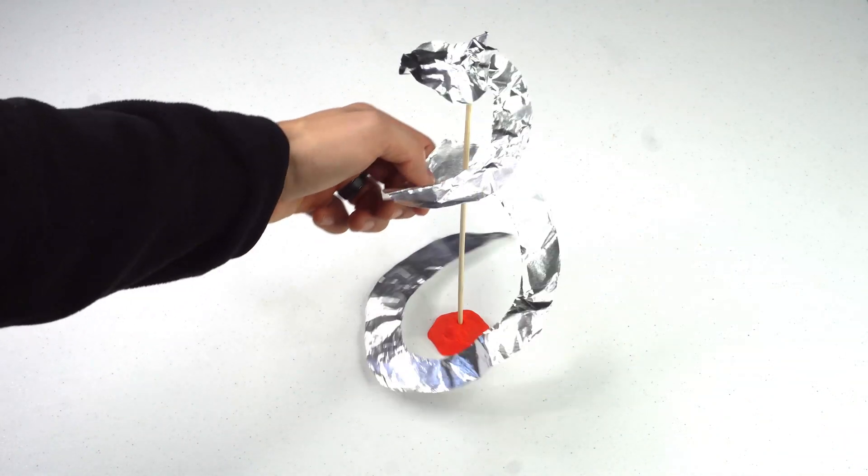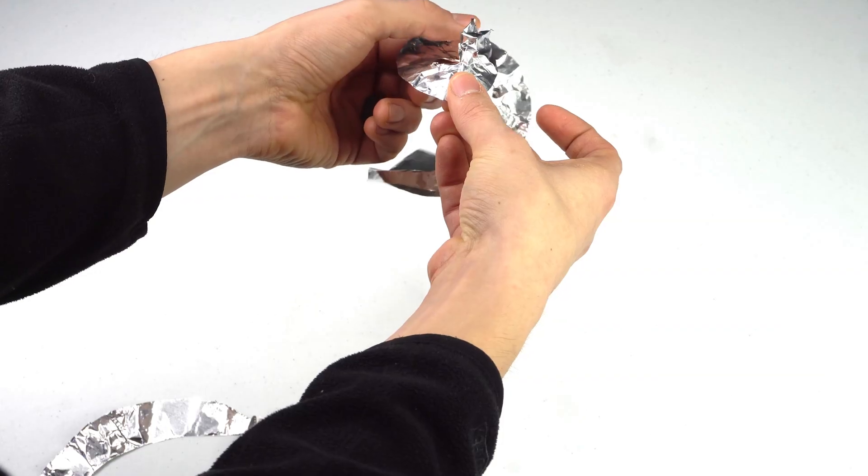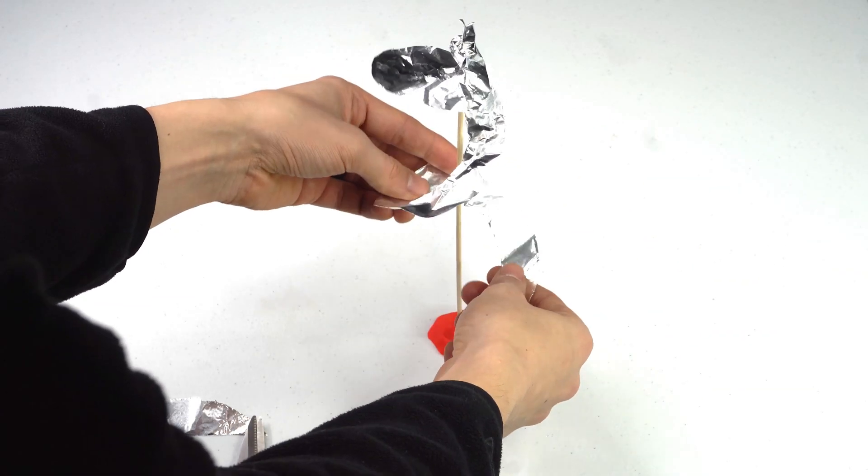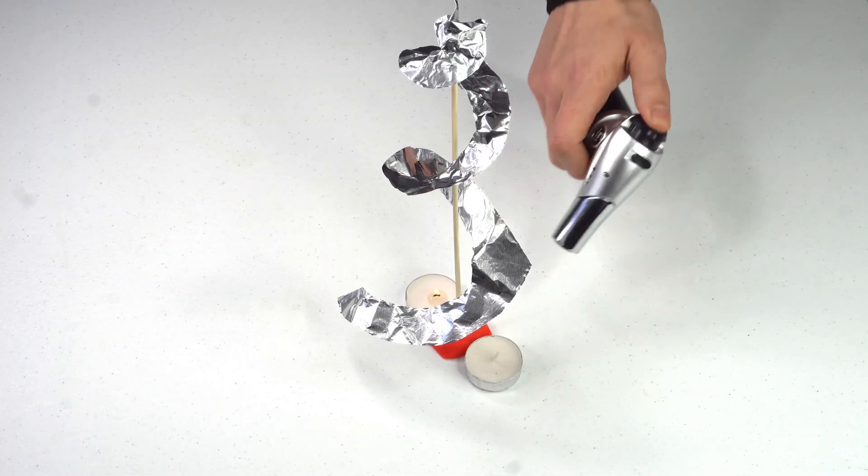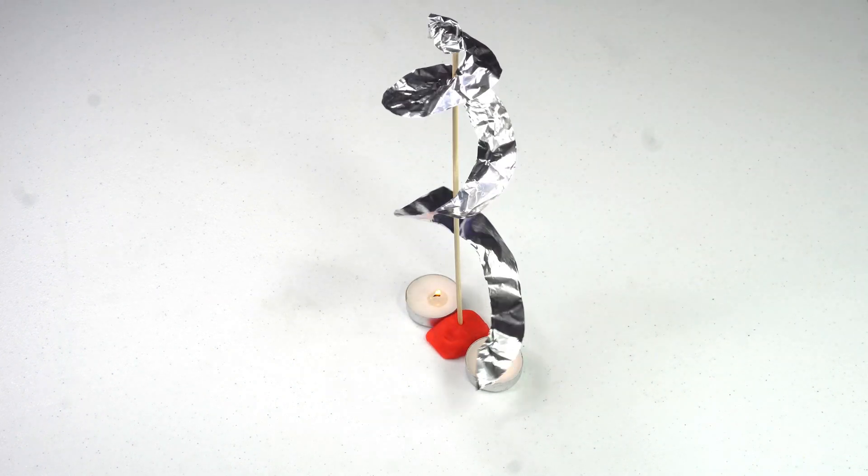Now that your spiral is on the skewer, go ahead and cut off any extra spiral material, so that the spiral is about two to three inches off the ground. After you're done with that, the last thing you'll need is some small candles. Go ahead and put two candles on either side of the skewer and light them up.